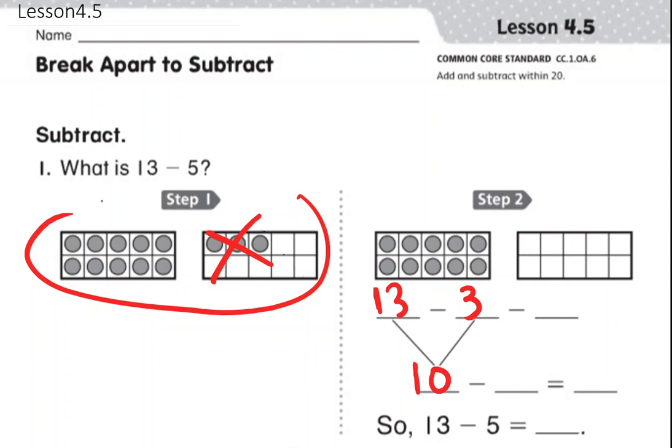But that's not it. That's not all of it. We only took away 3 and we still have to take away two more to make 5. So once we take away these two, we'll have our answer.